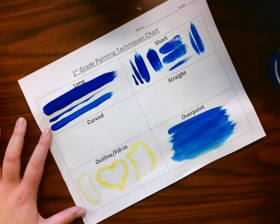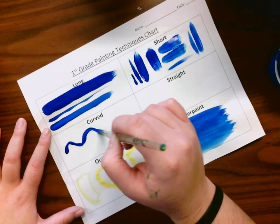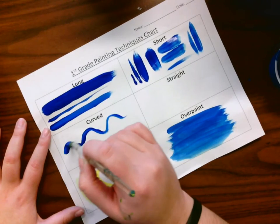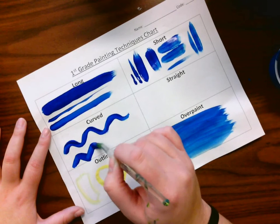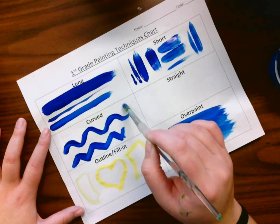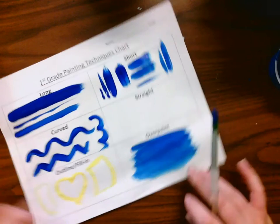Next are the curved lines. These can be skinny. They can be big. They don't just have to be wavy curves. They can be zigzag. They can be c's and threes.